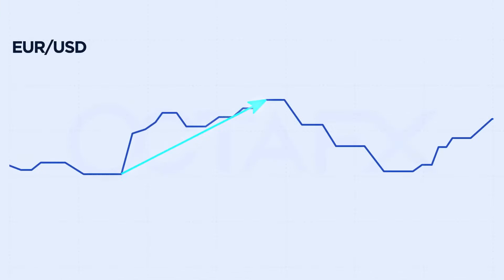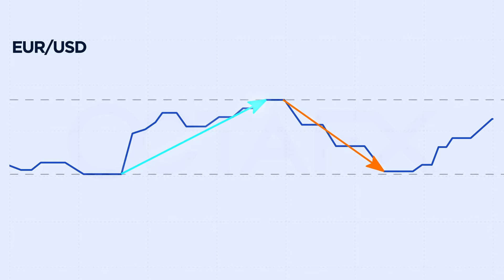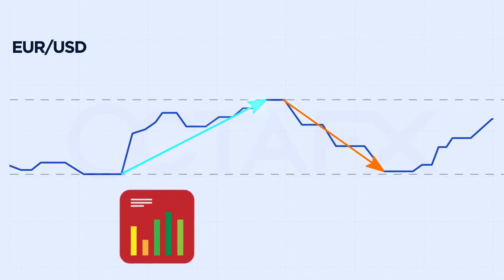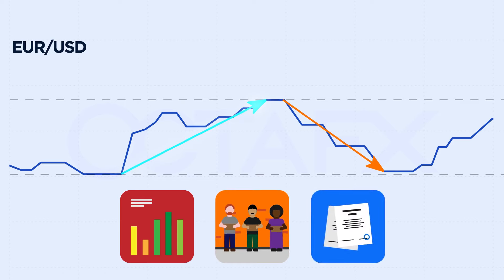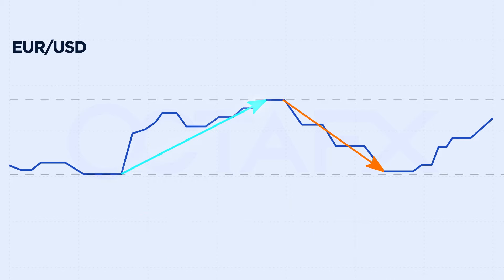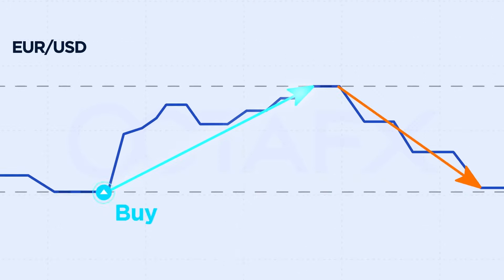Volatility measures price variations over a specified period of time. It increases when macroeconomic factors such as inflation, unemployment, and GDP become more variable. High volatility creates trading opportunities you can benefit from by keeping up with financial news. For example, if you know from the news that the inflation rate in Europe will decrease, you can earn by buying euro–US dollars at this point and selling at this point.